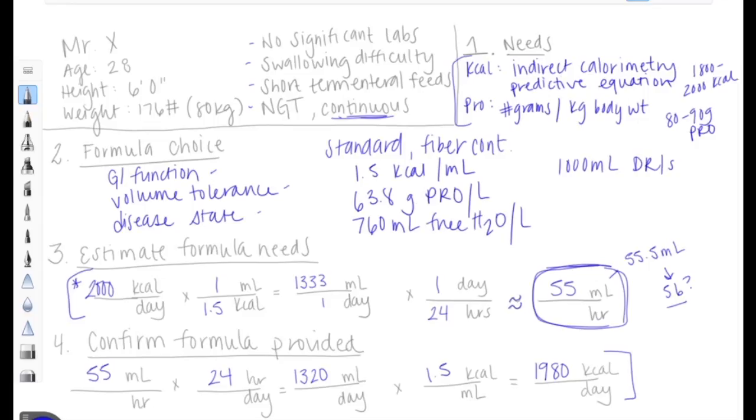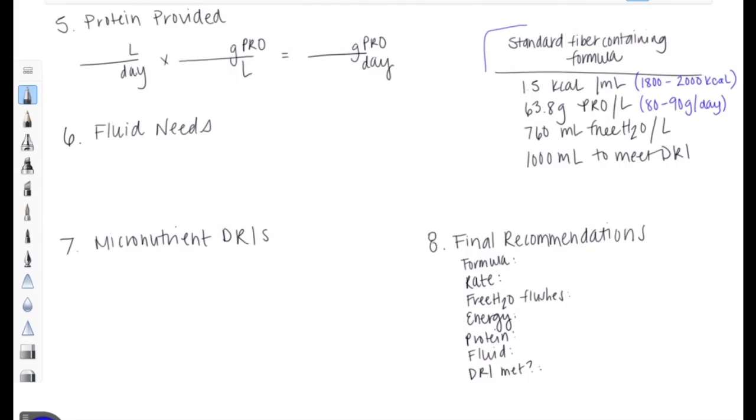So before we clear the page, I want you to take note of one specific number. That's this, 1,320 milliliters per day. This is the total volume we'll be providing to this patient. But in our future calculations, we'll actually need it in the ratio of liters per day, just for ease of calculation. So if you remember, there's 1,000 milliliters per liter, so this would equal 1.32 liters per day.